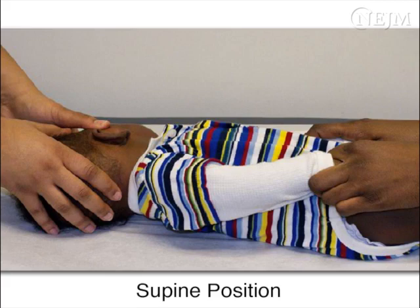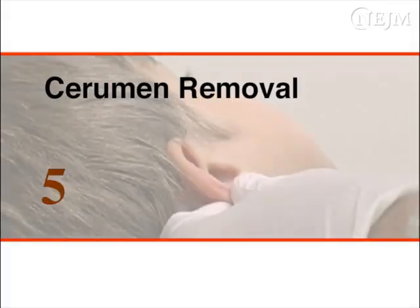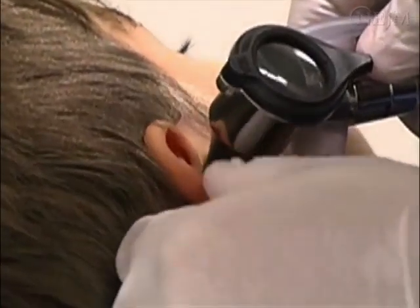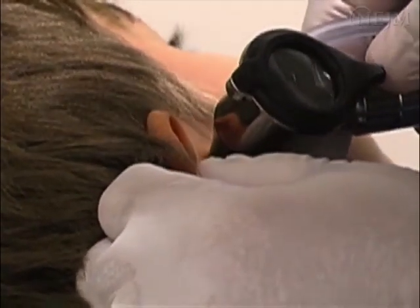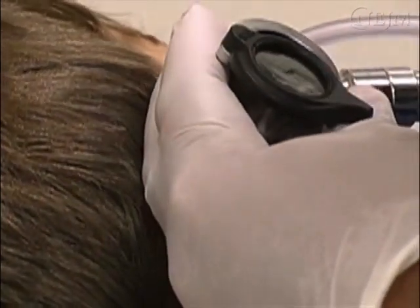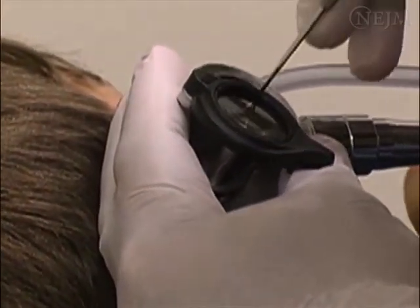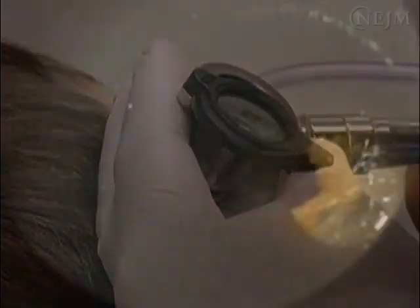Depending on the child's position, one of the assistants must also firmly hold the child's hands. With the child fully immobilized and with the child's head secured by an assistant, insert the otoscope into the external auditory canal using your dominant hand. Once in the proper position, use your non-dominant hand to hold the otoscope in place. Partially displace the lens of the otoscope and insert the blunt ear curette into the speculum.